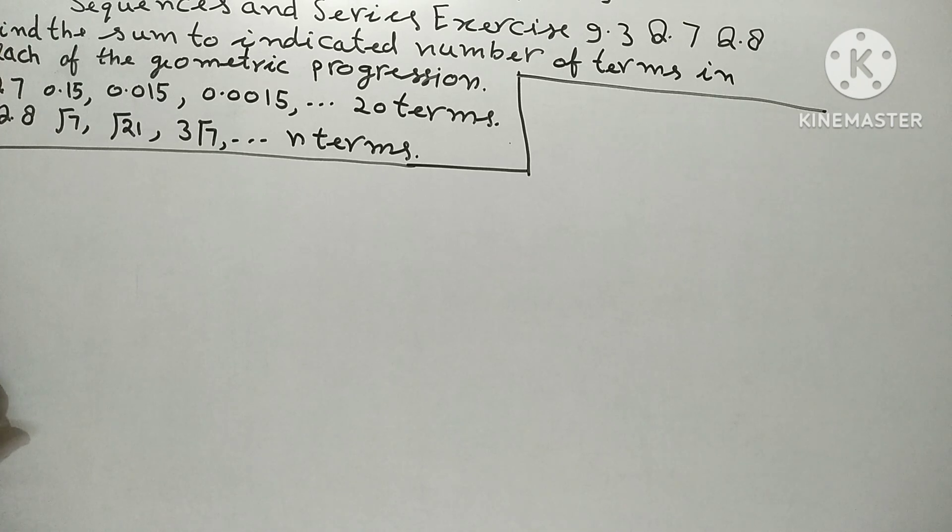Find the sum to indicated number of terms in each of the geometric progressions. Question 7th: 0.15, 0.015, 0.0015, and so on, to 20 terms.